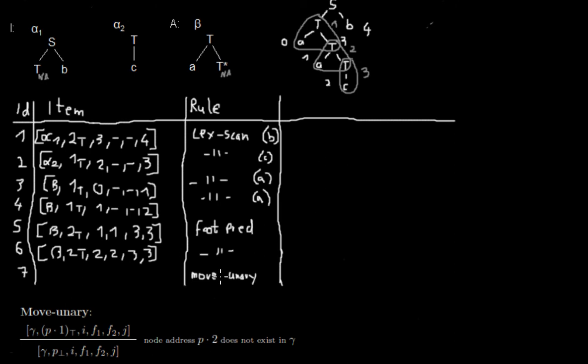In this video I explain to you the move unary rule for CYK parsing for tree adjoining grammars. The move unary rule, if you have seen my previous videos, is the first rule that needs previous items.